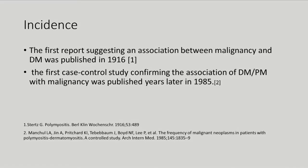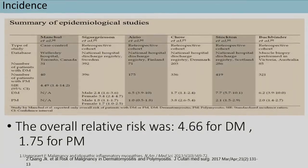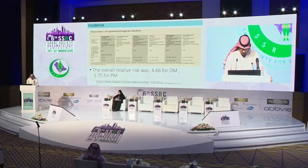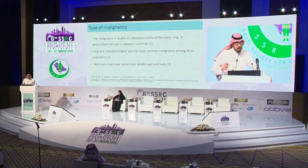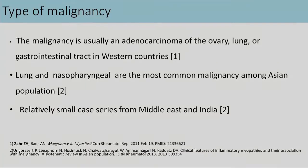In 2017, a meta-analysis including most of the previous studies estimated the incidence of myositis. The results showed that the relative risk was 4.7 in dermatomyositis and 1.8 in polymyositis. Regarding the type of malignancy, as a general rule, all types of malignancy can be seen as cancer-associated myositis, but solid cancers are more common than hematological malignancies.